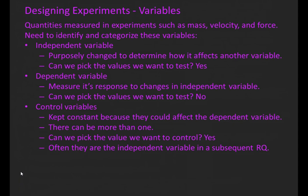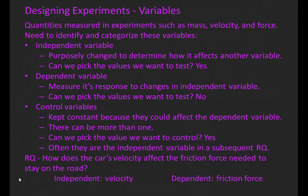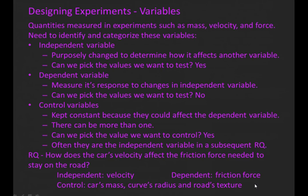Let's take a look at our sample research question: how does the car's velocity affect the friction force needed to stay on the road? The independent variable is velocity because it's doing the affecting. The dependent variable is friction force because it's the variable that's being affected. And then the control variables—the car's mass, the curve's radius, and the road's texture—could also affect the friction force, so we need to keep them constant.